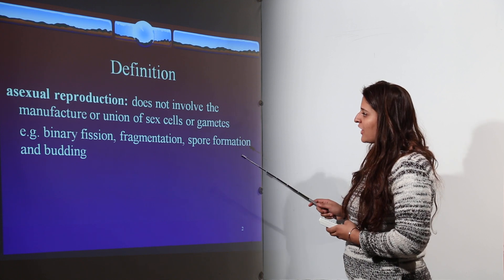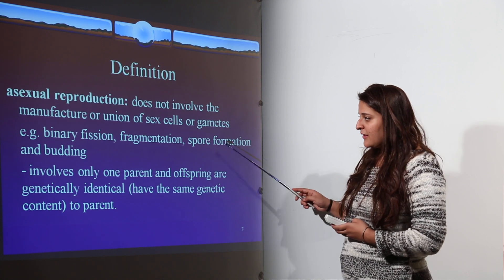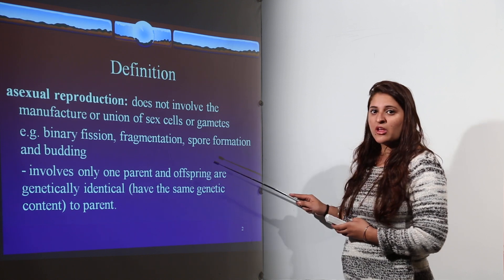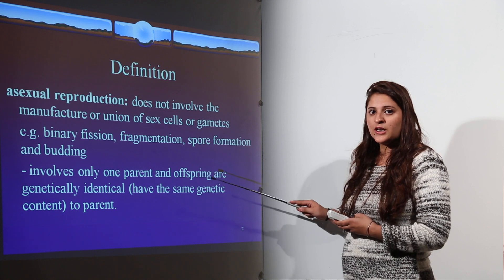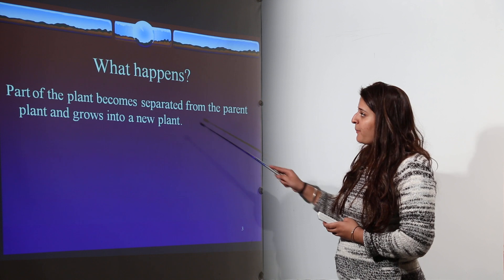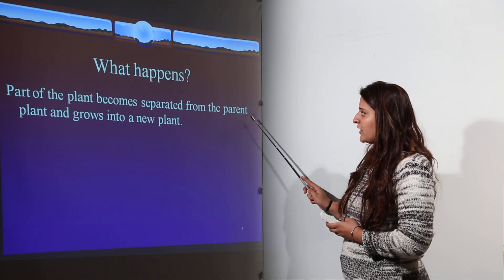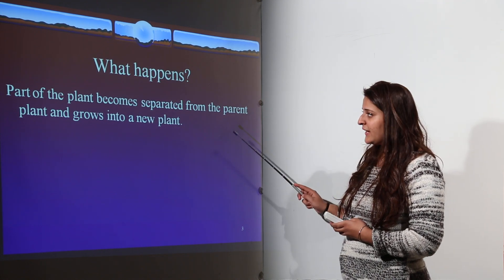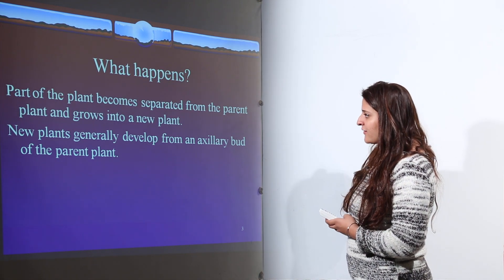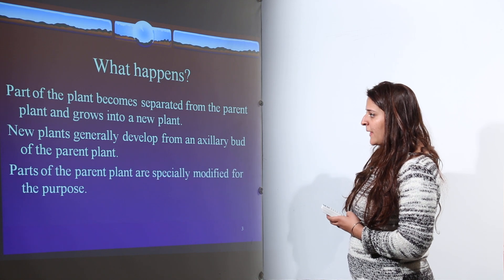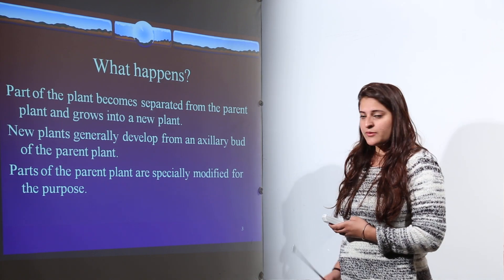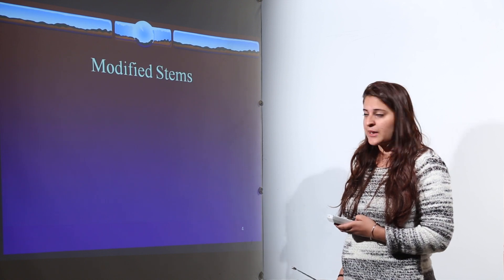These are various examples of asexual reproduction. It involves only one parent, and the offspring produced are genetically identical to their parents. In asexual reproduction, a part of the plant becomes separated from the parent plant and grows into a new plant, generally developing from an axillary bud.